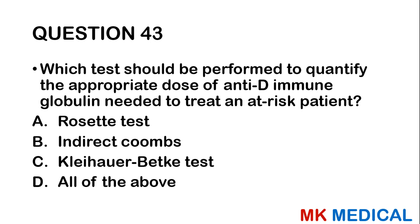Question forty-three: Which test should be performed to quantify the appropriate dose of anti-D immune globulin needed to treat an at-risk patient? A, Rosette test; B, indirect Coombs test; C, Kleihauer-Betke test; D, all of the above. Most likely this is the Kleihauer-Betke test.